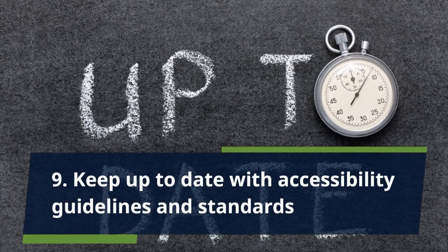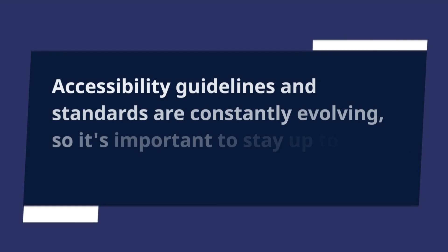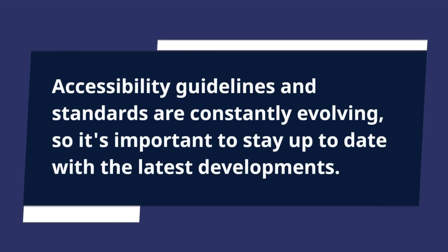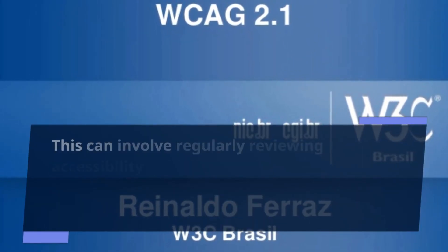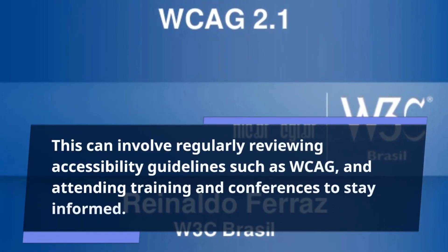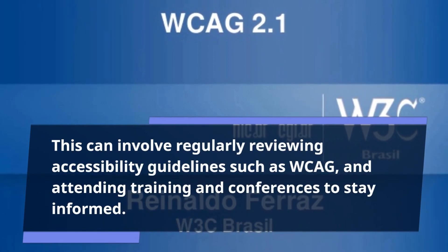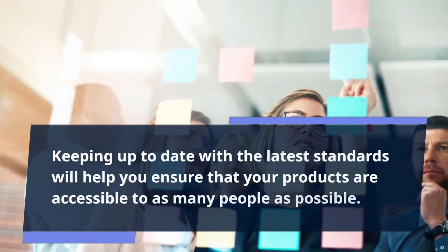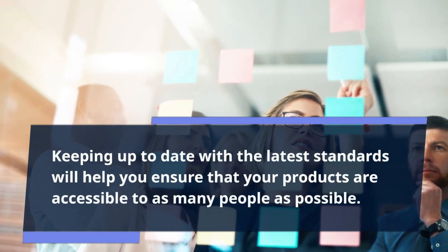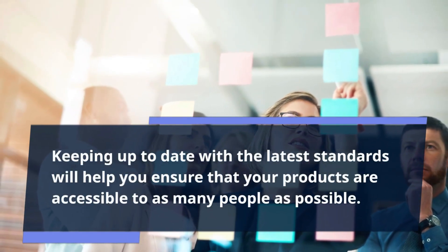Tip 9: Keep Up to Date with Accessibility Guidelines and Standards. Accessibility guidelines and standards are constantly evolving, so it's important to stay up to date with the latest standards. This can involve regularly reviewing accessibility guidelines such as WCAG and attending training and conferences to stay informed. Keeping up to date with the latest standards will help you ensure that your products are accessible to as many people as possible.